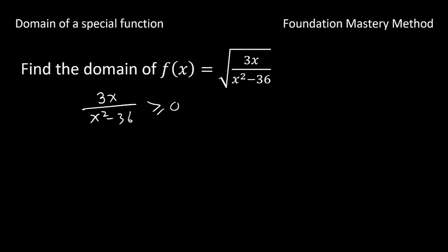To solve this nonlinear inequality we have to do it in a different way. First you solve the numerator: you get x equals 0. And then x squared minus 36 equals 0. So you get x equals plus or minus 6.